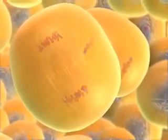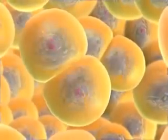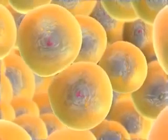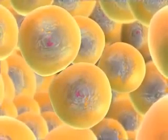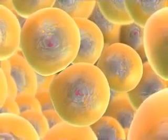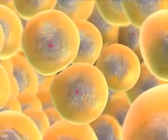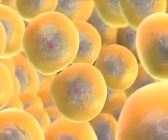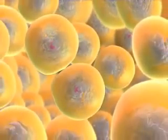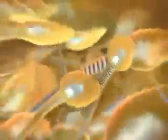Nuclear envelopes reform, and each daughter cell divides into two cells. We started with a single diploid cell. And now that meiosis is complete, we have four haploid cells, cells with a single set of chromosomes. These haploid cells mature into gametes.